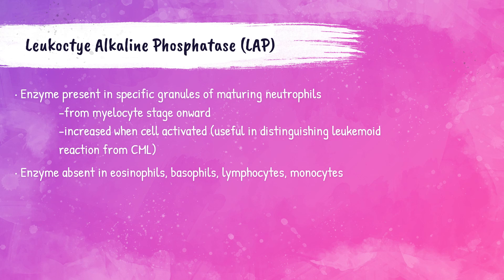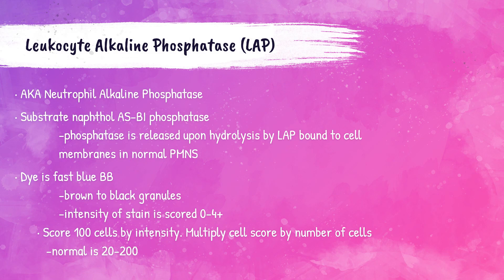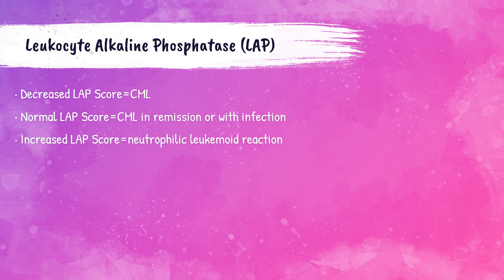Leukocyte alkaline phosphatase (LAP) stain detects alkaline phosphatase enzyme activity in primary granules of neutrophils; it is not present in eosinophils, basophils, lymphocytes, or monocytes. This stain is useful in distinguishing CML from a leukemoid reaction, as the two look very similar. The substrate is naphthol ASBI phosphatase; the dye is fast blue BB, staining brown-to-black granules. Staining intensity is scored 0 to 4+; 100 cells are scored, multiplied by the number of cells. A decreased LAP score indicates CML, a normal score indicates CML in remission or infection, and an increased score indicates a neutrophilic leukemoid reaction. Normal is around 20 to 200.